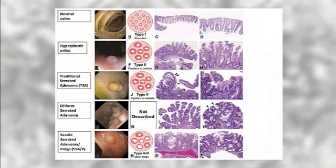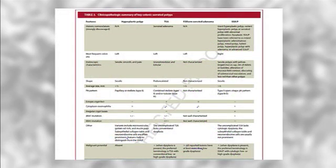In the interest of time, we will refer the viewers to the review article for a detailed discussion on the endoscopic appearance, including pit patterns, histology, and the molecular biology of serrated polyps. Dr. Arnold, by displaying the key information in both image and table form, it is apparent the serrated polyps are truly diverse and look quite different histologically and at the molecular biology level. Regarding the molecular biology, what should the viewer know about the serrated pathway of neoplasia?